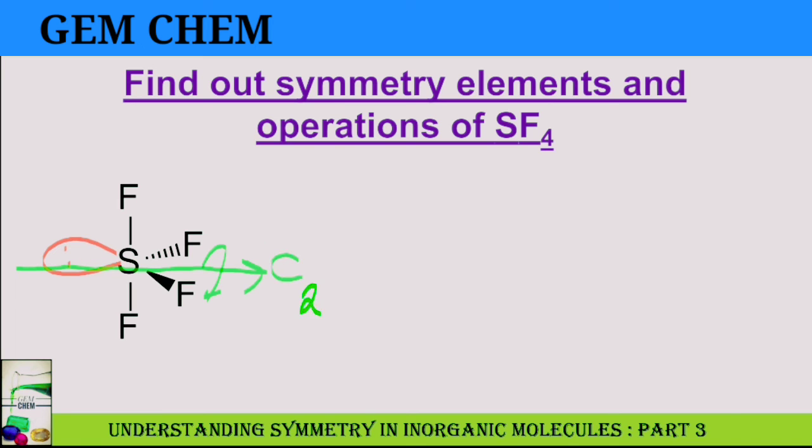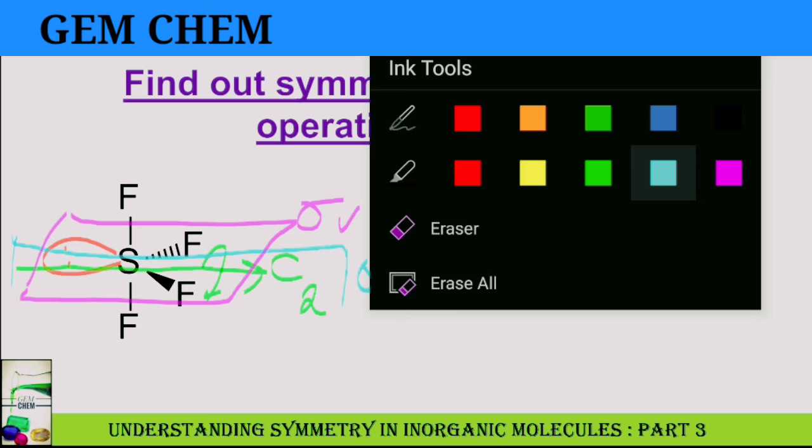To find out our sigma-V's whether present or not: one sigma-V will pass through the same part as C2, another will be in the perpendicular direction. This portion will be another sigma-V, and this one is our another sigma-V.